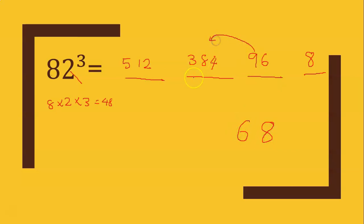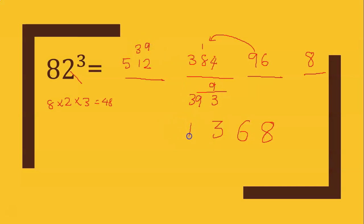I add: 384 plus 9 — 9 plus 4 is 13, carry 1. Then 1 plus 8 is 9, and 3 is added, giving 39. Then 9 plus 2 is 11, carry 1; 1 plus 3 is 4; 4 plus 1 is 5. So 82 cubed is 551,368.